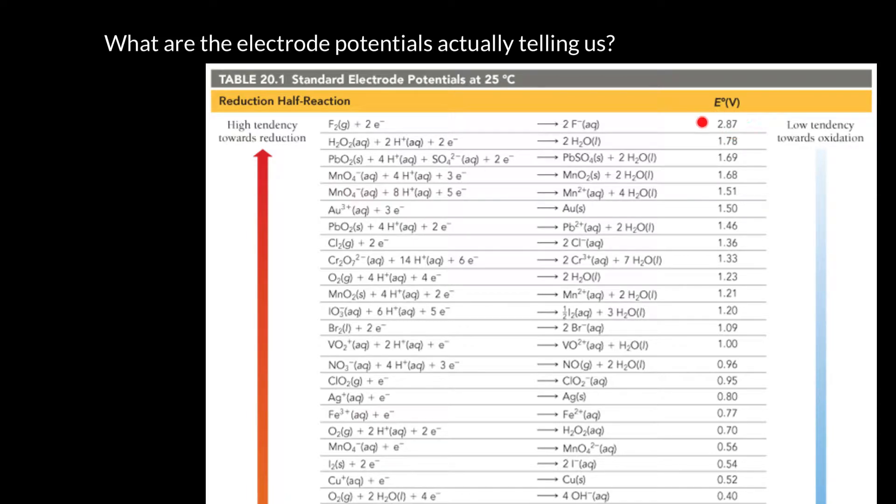And we also interpret the sign. The more positive it is, the more favorable it is. So right at the top of the list, we've got this electrode potential reaction.